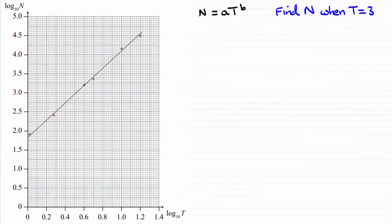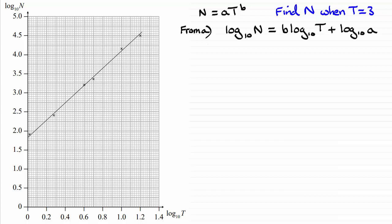For this part of the question, we've got to find n when t equals 3. We can't find it straight away because we don't know the values of a and b. But from the previous part, we were able to express this equation in this form here, which is very useful — especially when we've got this graph — because it has the form y equals mx plus c.